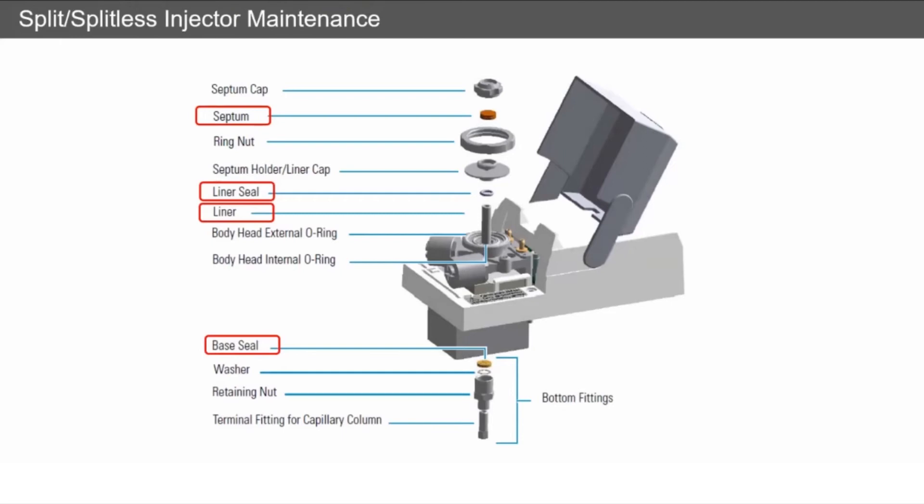So again, make sure that these are being replaced, and the base seal at the very bottom of every inlet system, there is a seal. This is to seal where the liner sits, and over time this will build up matrix, high boiling point compounds, and will become active. And this will lead to loss of analytes and calibration curves.